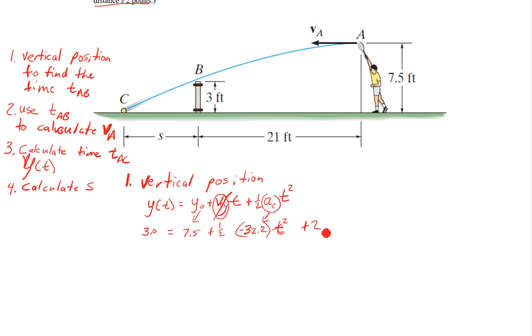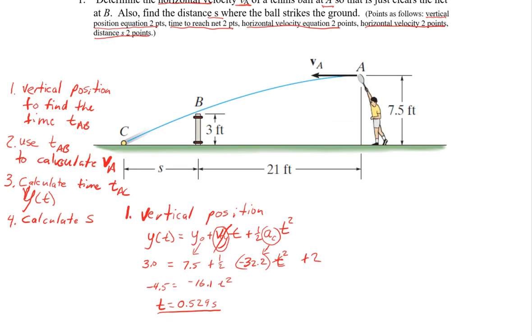So you get two points there. If you had this but didn't get quite the right numbers in there, I'd give you one point generally. So we get negative 4.5 on this side equals negative 16.1 t squared. Divide both halves by 16.1. Take the square root. We find t to the net is 0.529 seconds. I rounded that to three significant figures. And that was one of the things we were looking for. Actually the second thing. So it should be a good hint that we're on the right track. So that's plus two there.